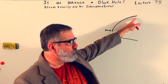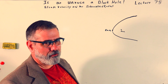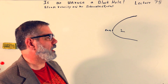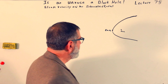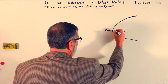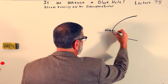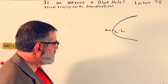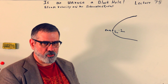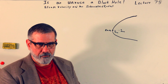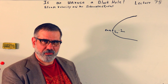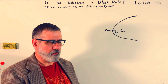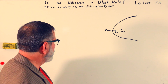The answer is right here at the closest point. So let's call this distance r_min — the distance of close approach. You could call it apogee, but that doesn't seem to really fit since it's not an orbit. We'll call it that anyway.